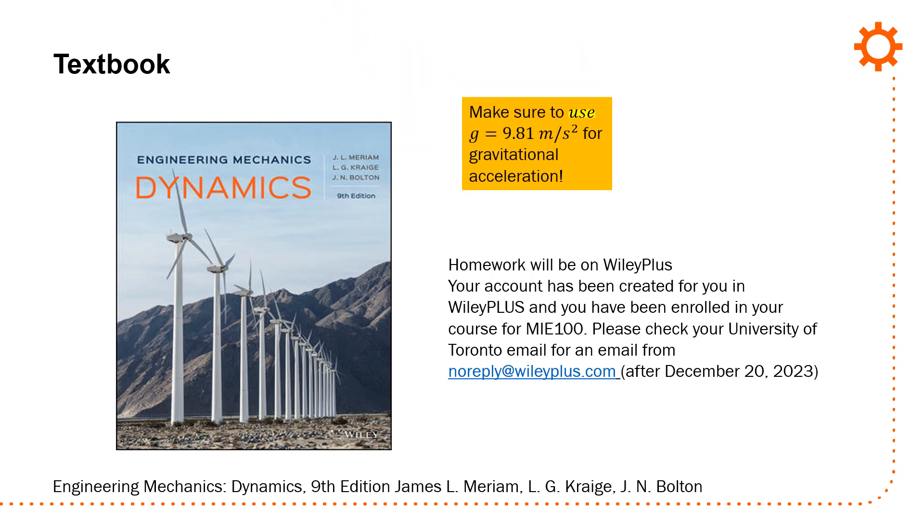This is going to be something I repeat frequently in this talk. Always use g equals 9.81 meters per second squared for gravitational acceleration. If you're retaking the course, please contact MIE 100 admin for some options. That is the email to use for administrative issues related to the course.